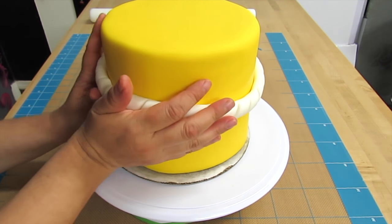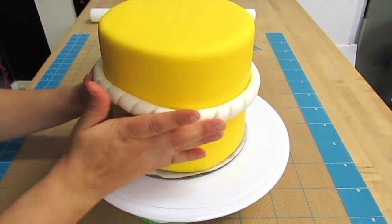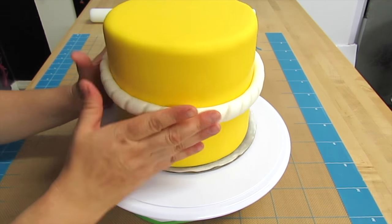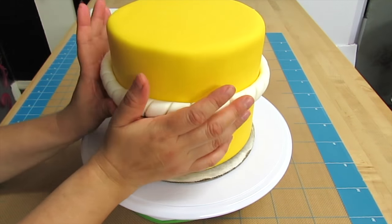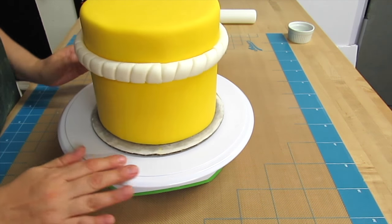Don't worry about it moving around on you too much. It will want to of course move down slowly, but you just do your best to hold it and nudge it into place until you don't see it moving anymore. Just like that. Remember, you're the boss, you tell the cake what to do.